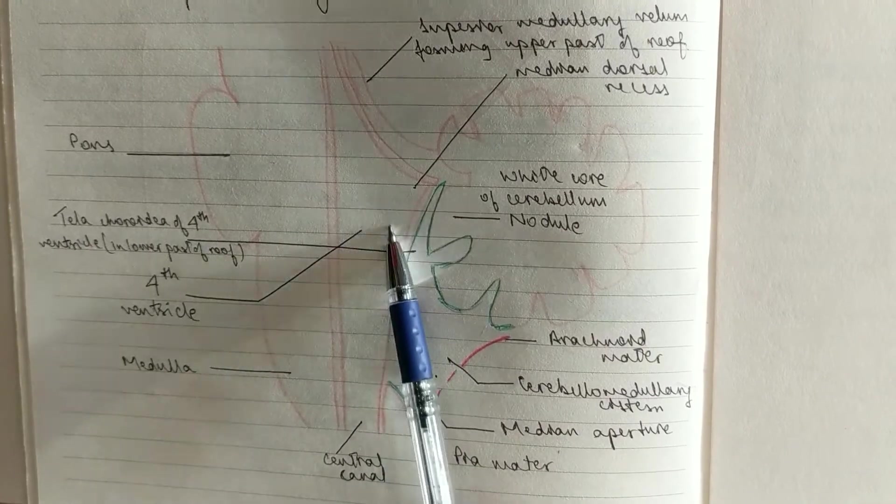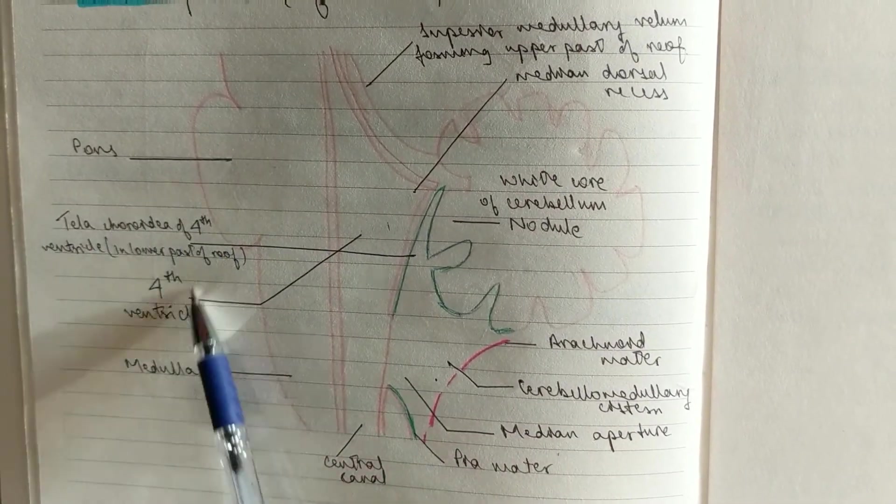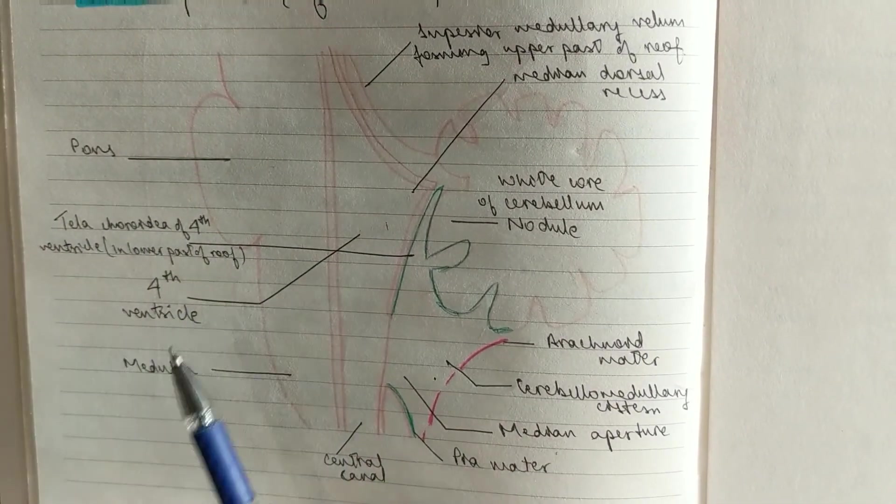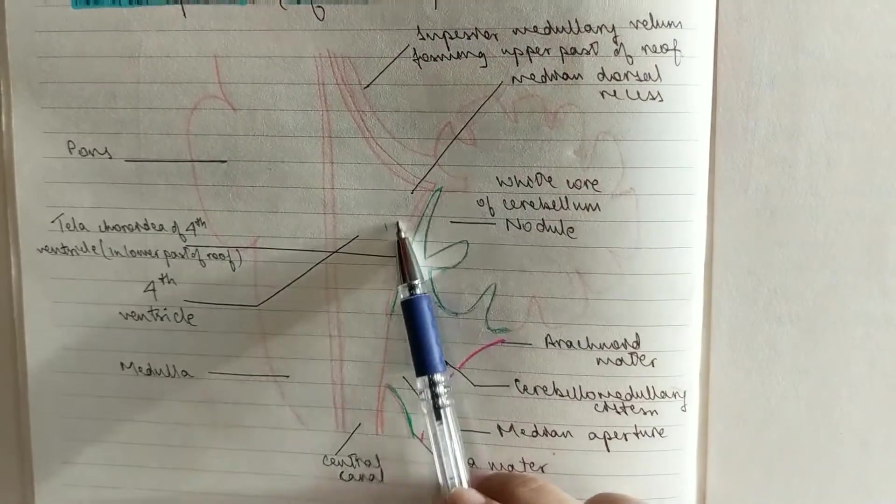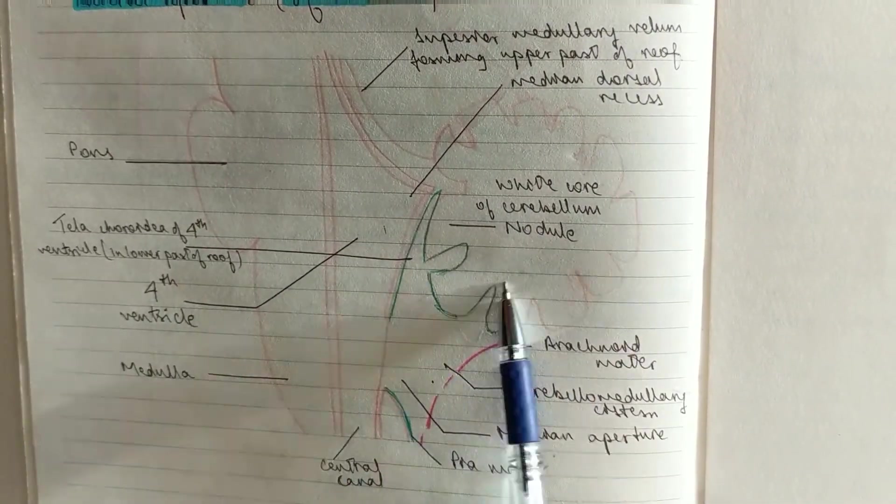So this is the fourth ventricle. It's behind the brain stem, so the pons and the medulla, and in front of the cerebellum. So it's sandwiched between both of them.